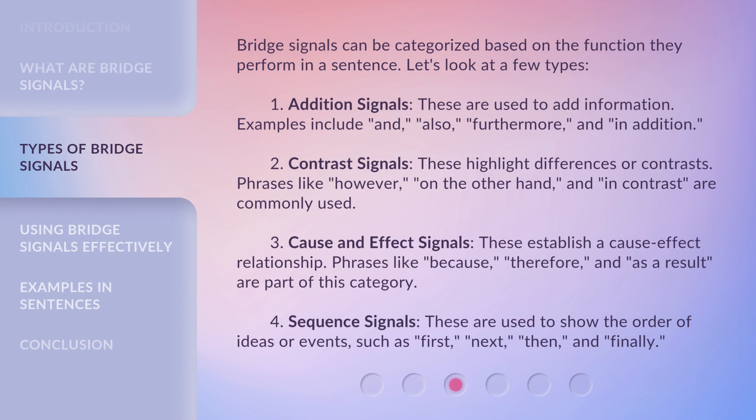Bridge signals can be categorized based on the function they perform in a sentence. Let's look at a few types. First, addition signals. These are used to add information. Examples include: and, also, furthermore, and in addition.